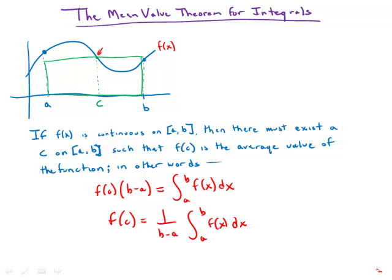And that is what we mean by the average value of the function. There must exist a c on the interval that gives that average value. So again, like the original mean value theorem for derivatives, this is another existence theorem. Mathematics is full of existence theorems, and mathematicians love these kinds of theorems.